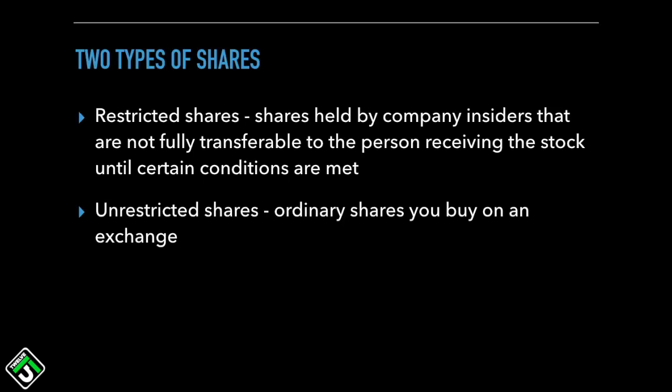There are two types of shares that make up total shares: restricted shares and unrestricted shares. Restricted shares are held by company insiders — employees given compensation in the form of stock. Lots of companies do this; they offer shares of stock on top of salary, but those shares can't be immediately sold. Usually there's some time restriction or work performance goal that needs to be met before the employee can actually sell the shares.